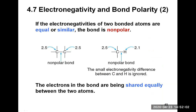If the electronegativities of two bonded atoms are equal or similar, the bond is classified as non-polar. For example, in a C-C bond, both carbons have an electronegativity of 2.5. Because they are the same type of atom, they attract electrons equally. The electrons in the bond are shared equally between the two carbons, so this bond is classified as non-polar.